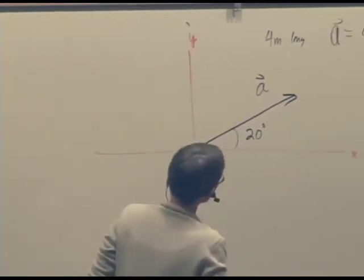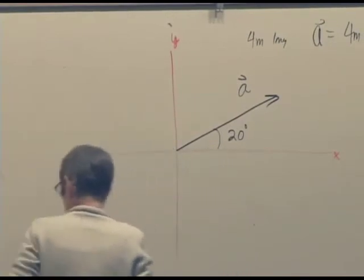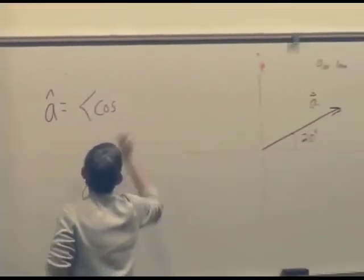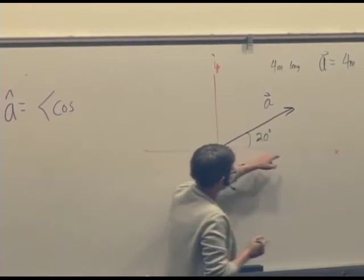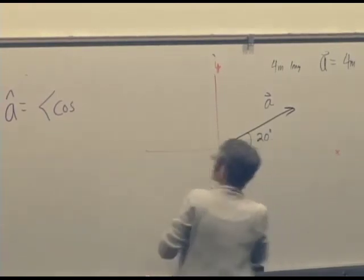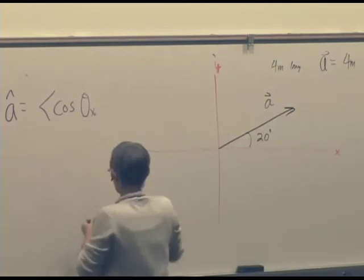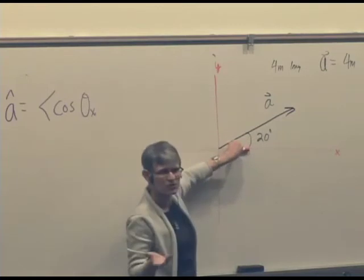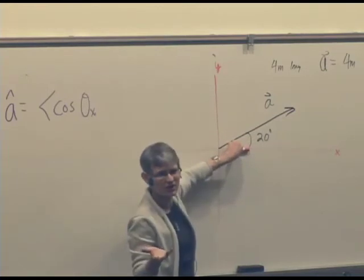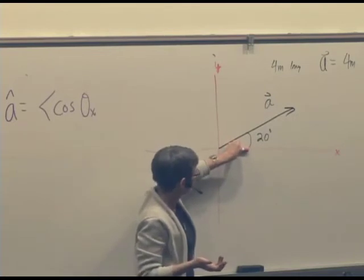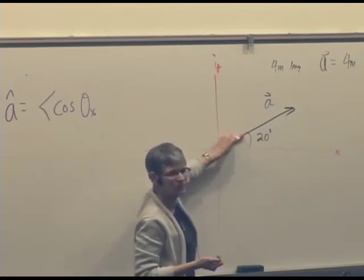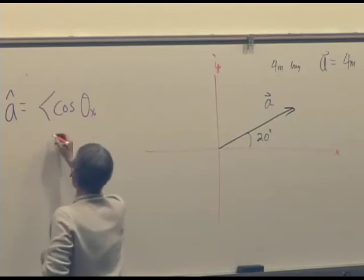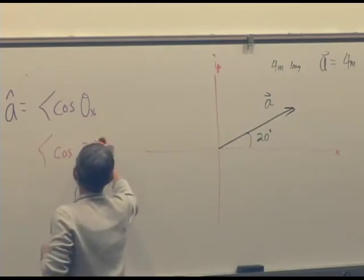What we do is write A-hat, the unit vector, where the x-component is the cosine of what we call theta sub x. What's theta sub x? Suppose you start with a unit vector (1, 0, 0) — that's just along the x-axis. The angle you have to rotate it through to get to A, that's theta sub x. So in this case we've got cosine of 20 degrees.